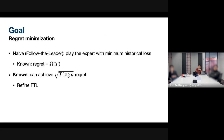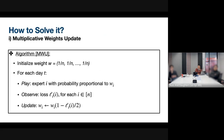The multiplicative weights update algorithm gets you basically square root T regret. You start with a uniform distribution over all experts and keep track of that as the internal state. Every day you play experts proportional to their weight, and after observing loss L_t, you update the weights according to a multiplicative rule: if the loss is one the weight is halved, and if the loss is zero the weight remains. This is equivalent to follow the regularized leader where the regularizer is entropy.